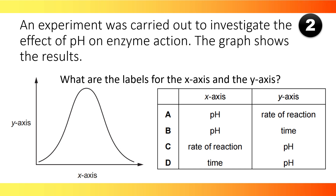An experiment was carried out to investigate the effect of pH on enzyme action. The graph shows the results. What are the labels for the x-axis and the y-axis? The x-axis is pH and the y-axis is rate of reaction. The answer is A.